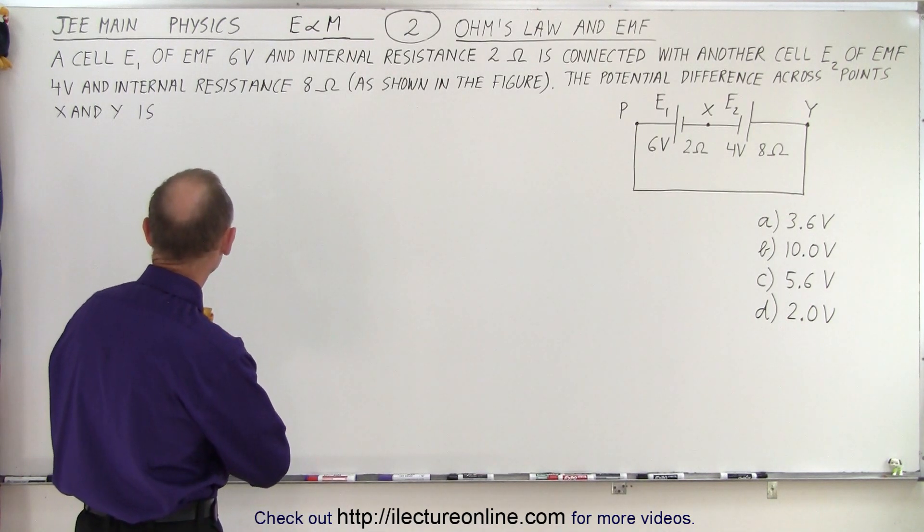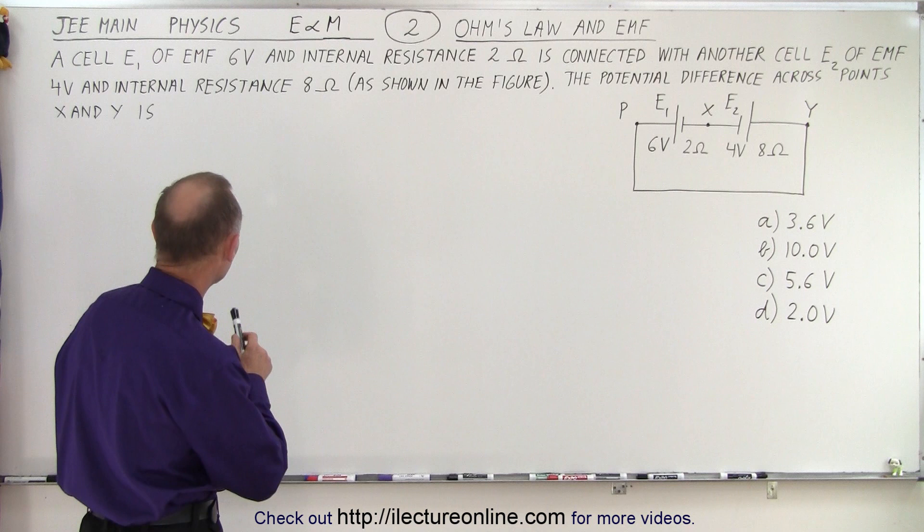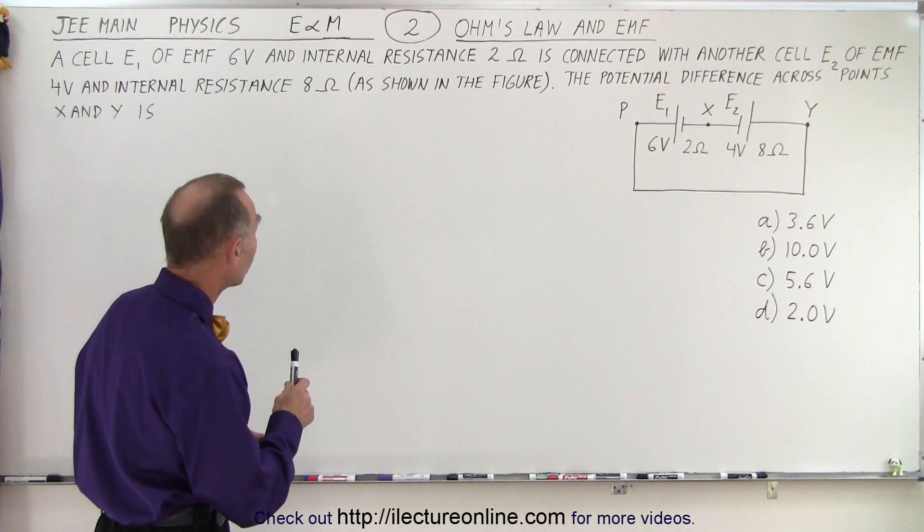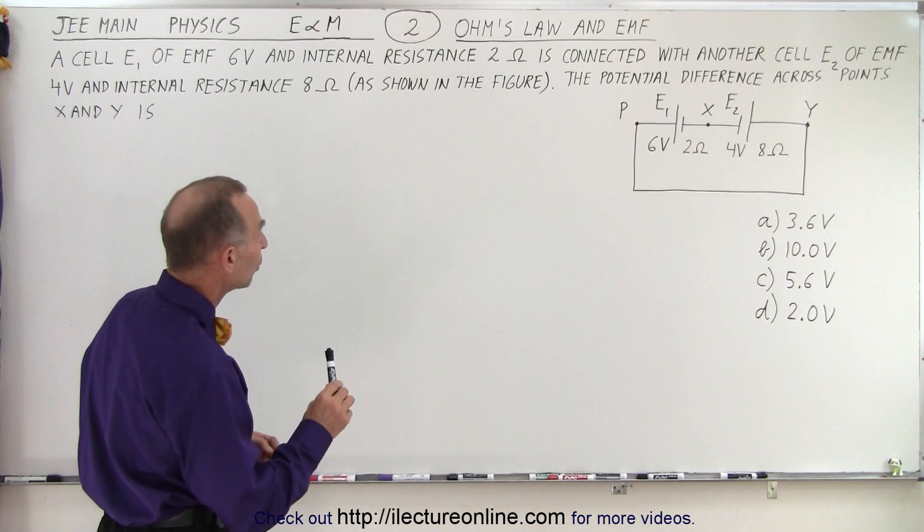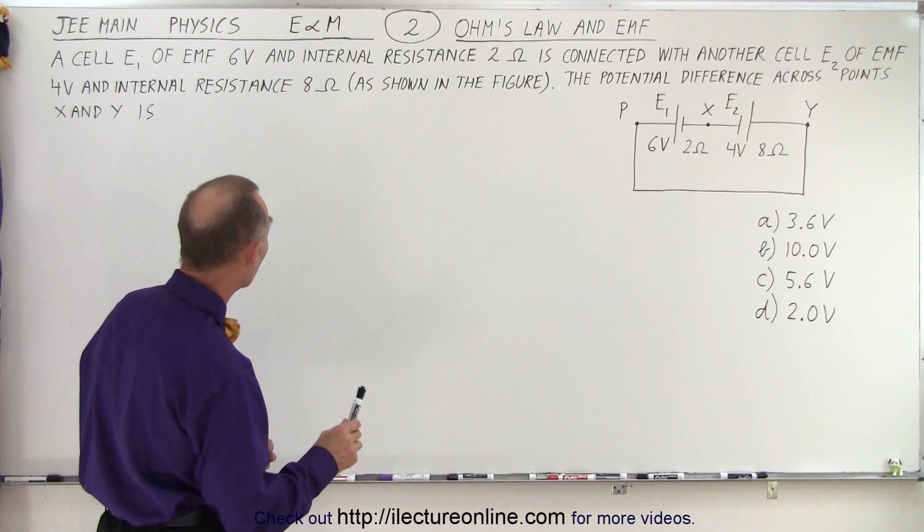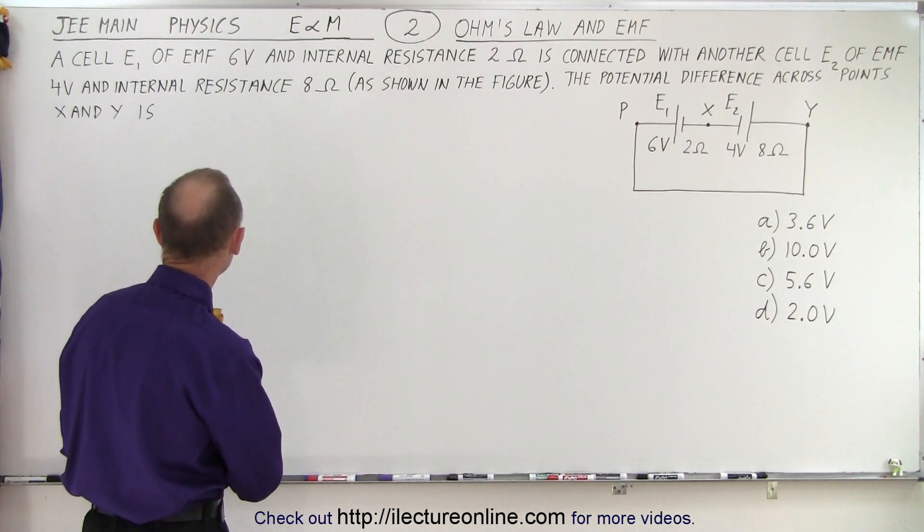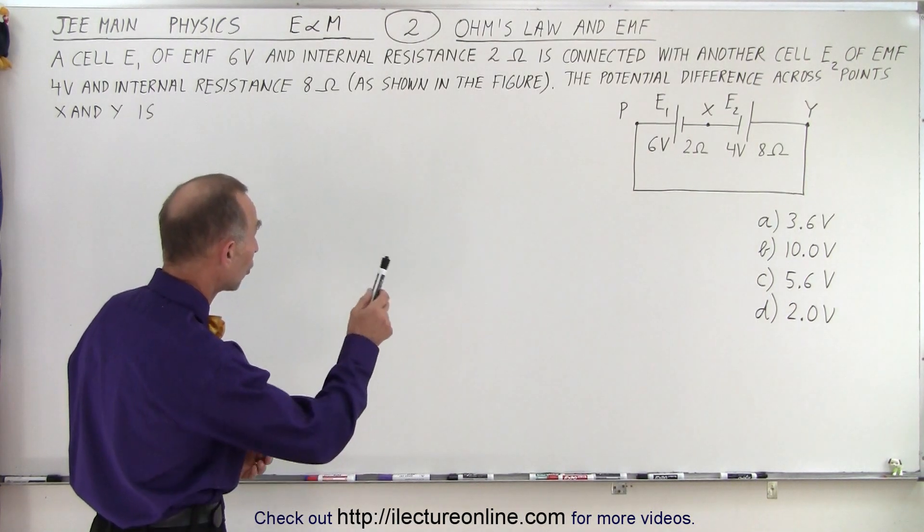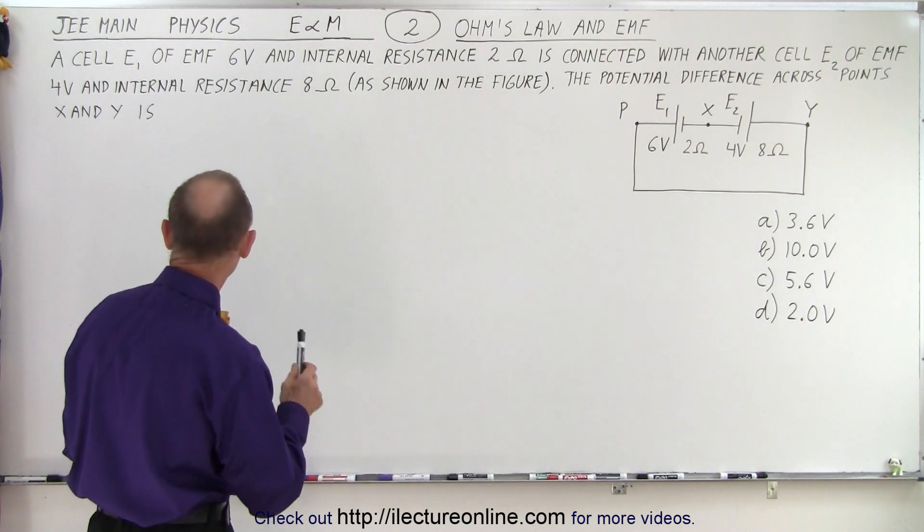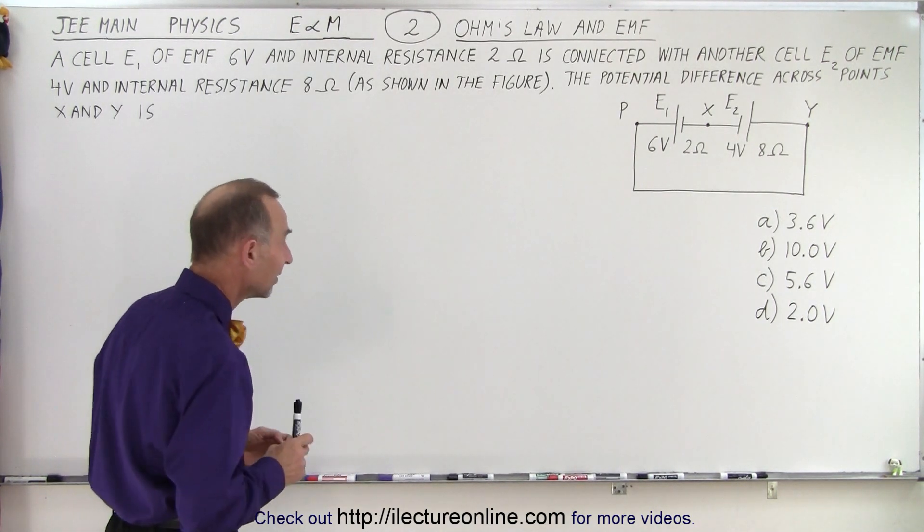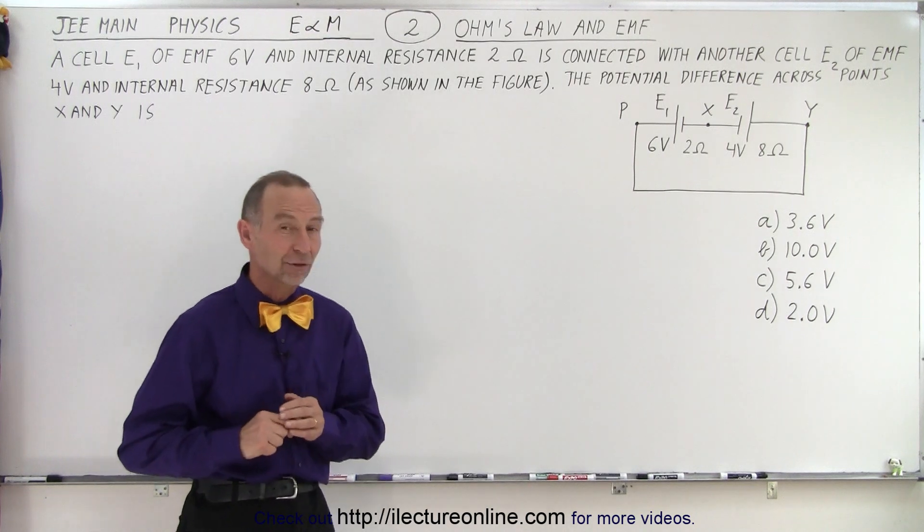It says a cell E1 of EMF 6 volts and internal resistance 2 ohms is connected with another cell E2 of EMF 4 volts and internal resistance 8 ohms as shown in the figure. The potential difference across points x and y is, and we get four possible answers.